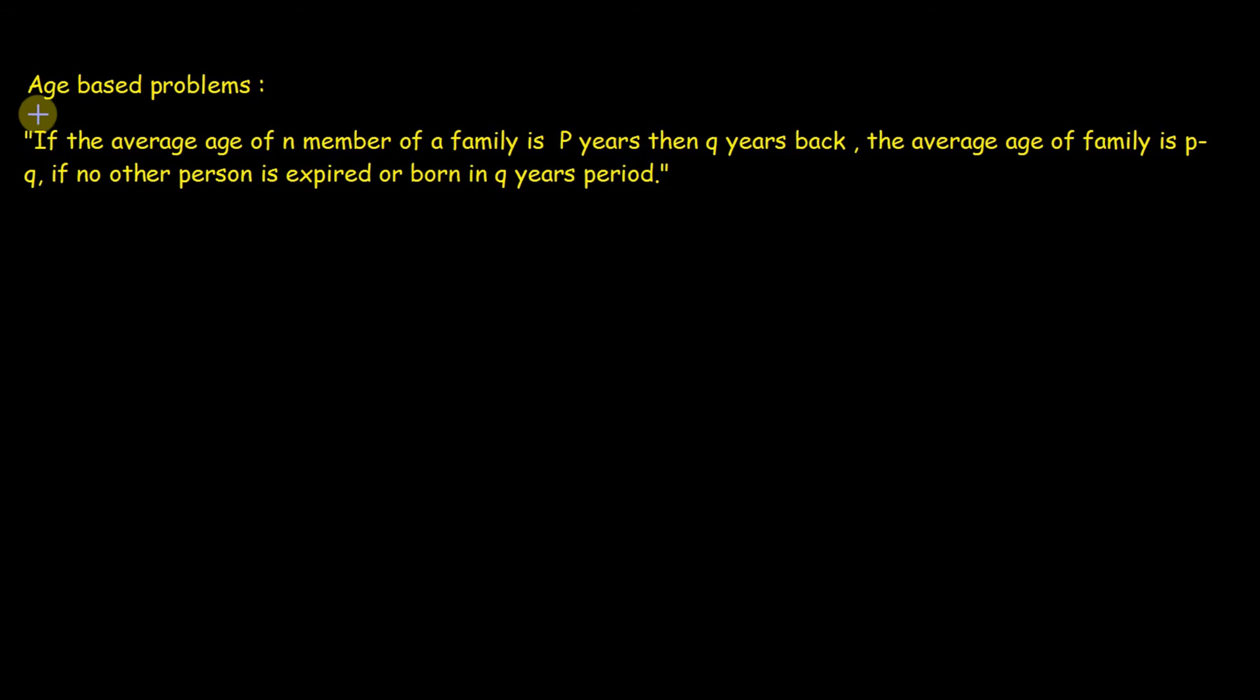Now we will see an application of average that is age based problem. Before moving to solve any question first see this important statement. If the average age of N members of a family is P years, then Q years back the average age of family is P minus Q if no other person is expired or born in Q years period.